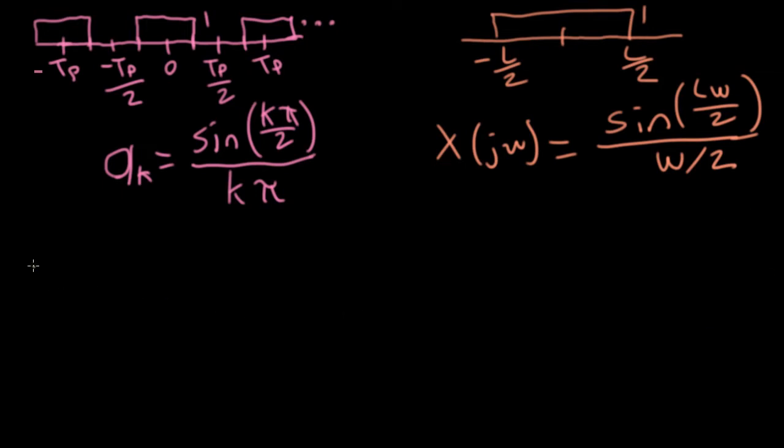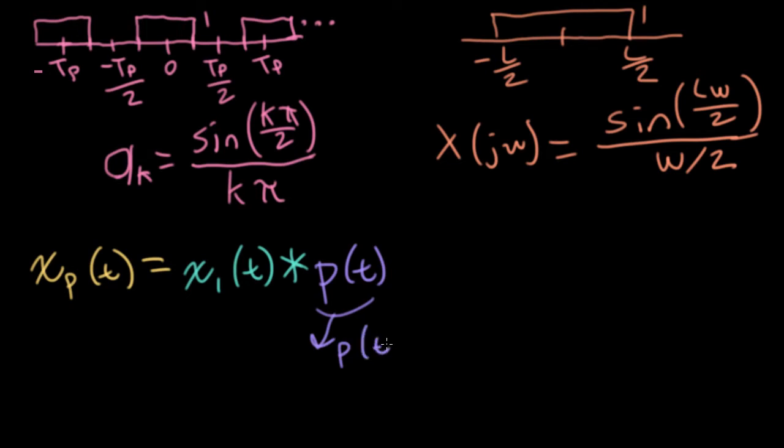So imagine I have a function, xp of t, that consists of some core element, x1 of t, that we're going to replicate in time by multiplying it by an impulse train pt. This impulse train pt is going to be a sum of impulse functions that are spaced by capital Tp.